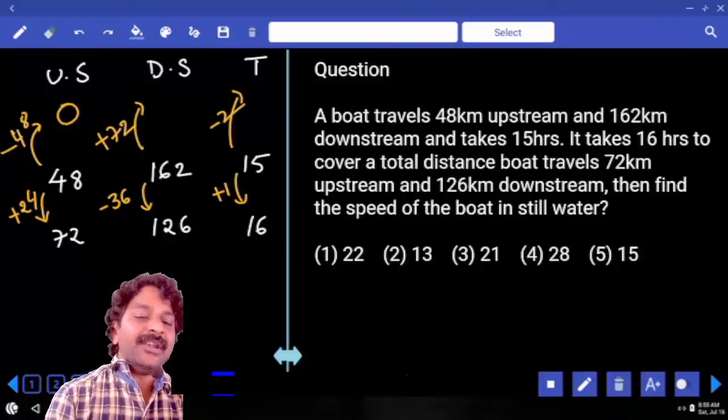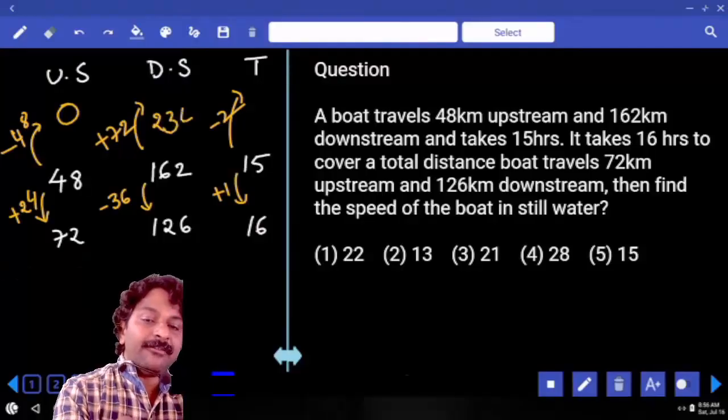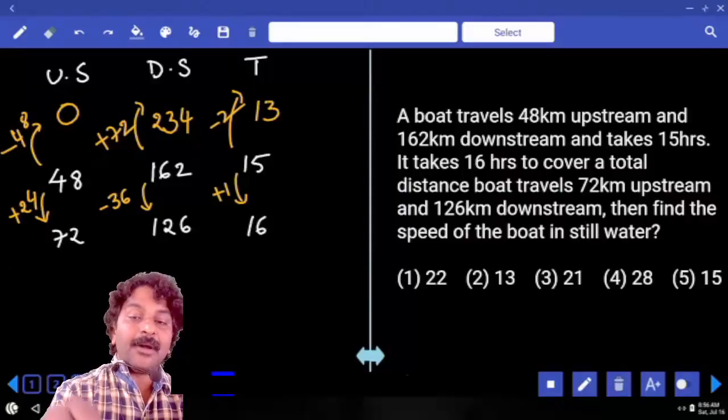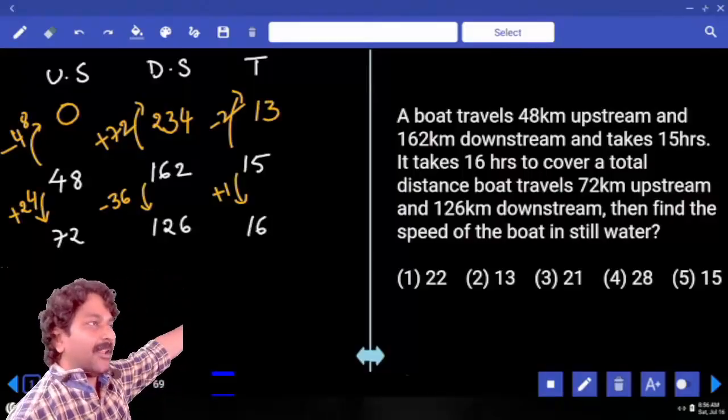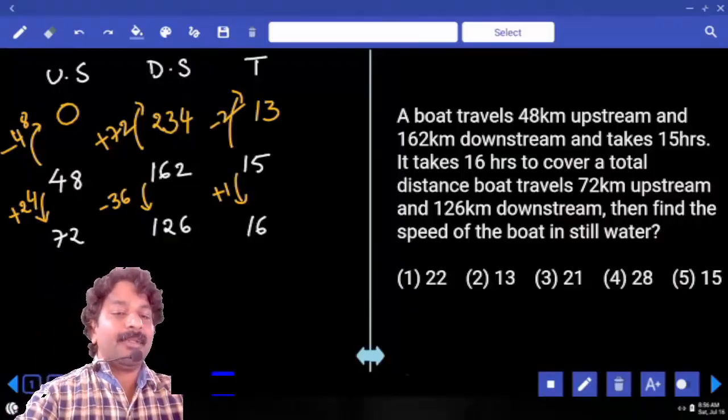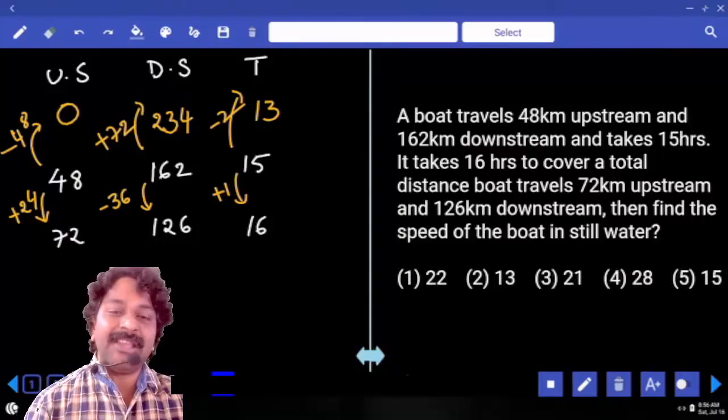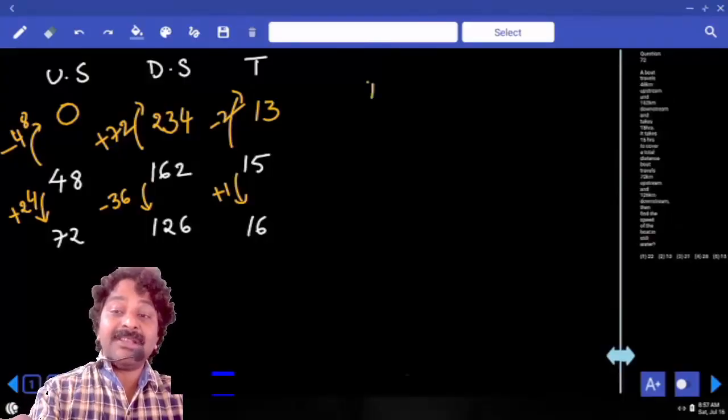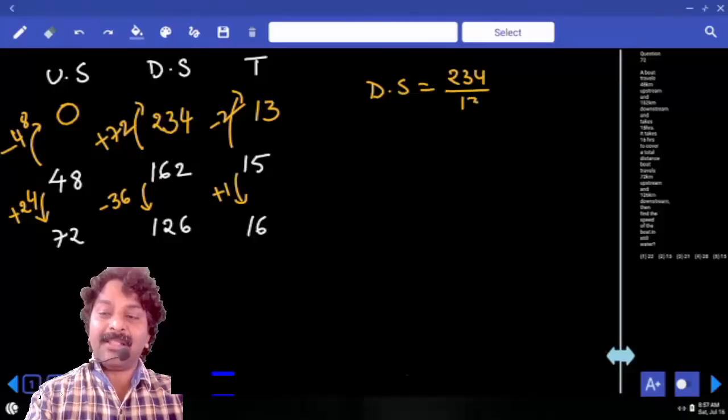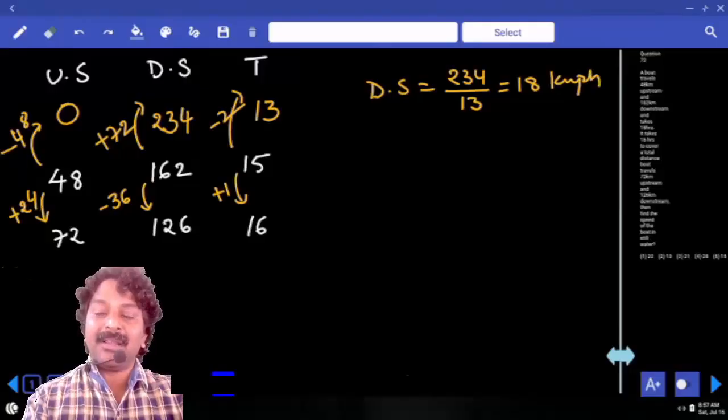When you add 72 to this fellow, it becomes 234. When you subtract 2 hours from 15. Now, observe first case, which is in your local. Zero kilometers covered in upstream. In downstream? 234. And how much time is it taking? That means downstream speed is equal to 234 divided by 13 which is equal to 18 kilometer per hour. Correct.